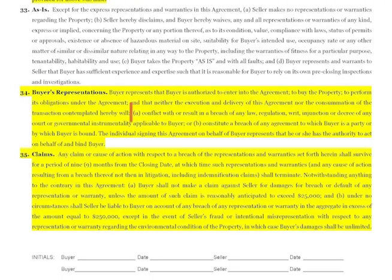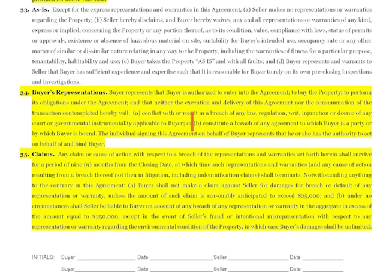Section 34 is buyer's representations. In the old agreement buyers made no representations, but we added some basic ones. First, the transaction does not conflict with or result in a breach of any law, regulation, or injunction — the buyer is confirming it's not illegal to enter this contract. Subsection b says entering into the agreement does not constitute a breach of another agreement the buyer has entered into. Finally, the individual signing on behalf of buyer represents that they have authority to sign.